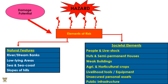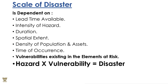What are the elements of risk? In terms of natural features, it might spoil our river banks. If low-lying areas or sea coasts are involved, it will harm the flora and fauna of the vicinity, and the slopes of hills too. In terms of society, it impacts daily life — people, livestock, semi-permanent houses, weak buildings, agriculture, horticulture, livelihood tools, equipment, unsecured personal assets, and public infrastructure. What way can we prevent it and how do we go around it?